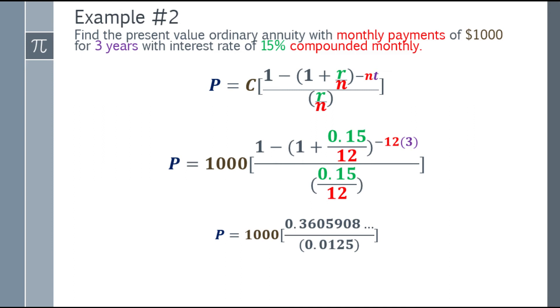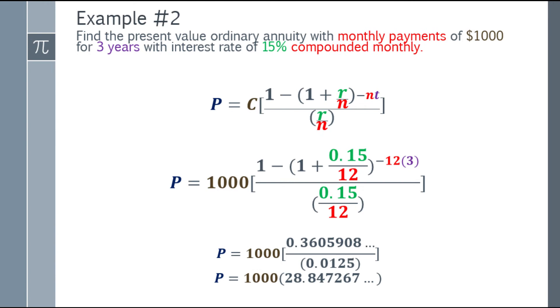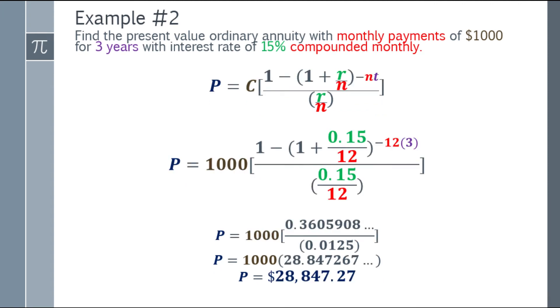Next step, simplify it further. Divide 0.36 something by 0.0125 and the answer will be 28.847267 and decimal. Lastly, multiply it by 1,000 and you get $28,847.27.